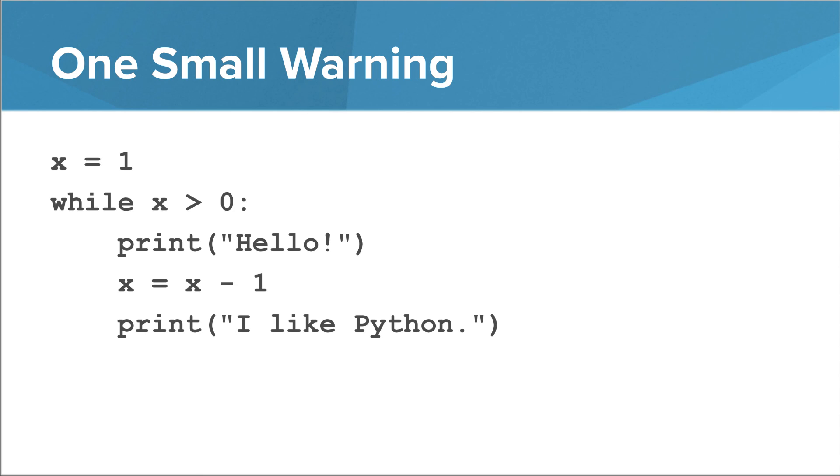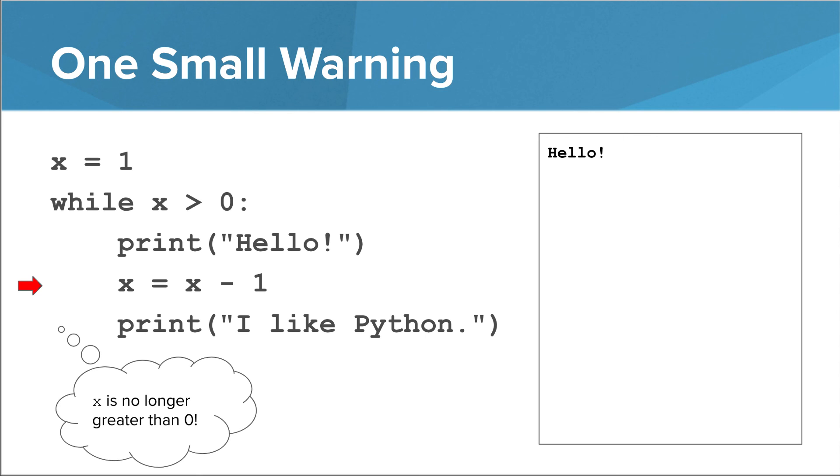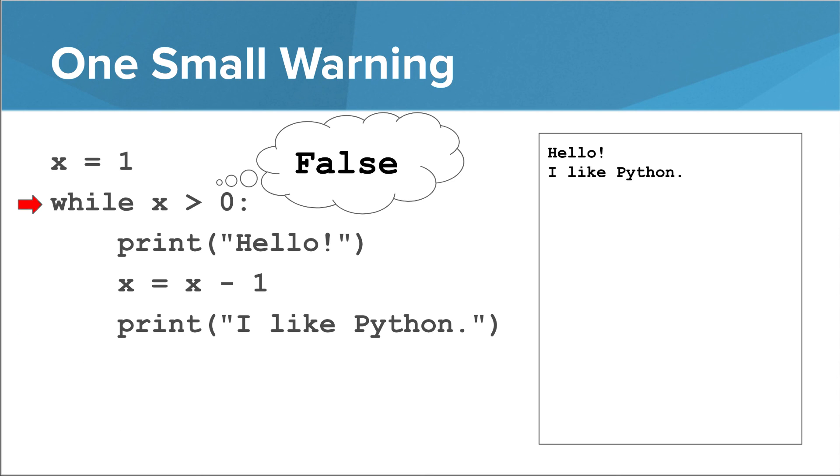Alright, one quick note. Even if condition becomes false in the middle of the loop, it doesn't get checked again until the body of the loop is finished. In this program, the first print runs, then x becomes 0, which will eventually mean the condition of the while loop will be false. However, since this isn't checked until the interpreter returns to the top of the loop, the second print runs as well. Then the interpreter returns to the top, and since the condition is false, the loop is over.